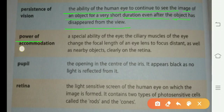Power of accommodation: the special ability of the eye where the ciliary muscles of the eye change the focal length of the eye lens to focus distant as well as near objects clearly on the retina.